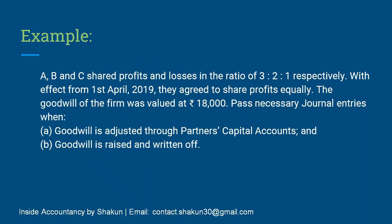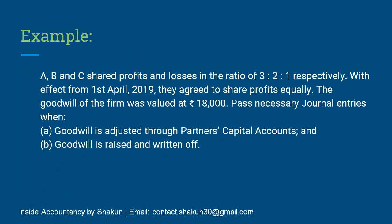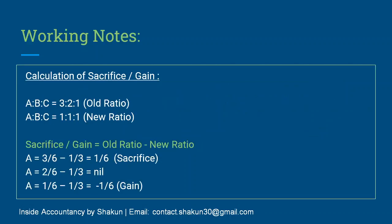Now let's take an example. A, B, C shared profits and losses in the ratio of 3:2:1 respectively — that's the old ratio. With effect from 1st April, they agreed to share profits equally, that is 1:1:1, which is the new ratio. The goodwill of the firm was valued at 18,000. When you read 'was valued at,' that refers to new goodwill. Pass necessary journal entries when (1) goodwill is adjusted through partners' capital accounts, and (2) when goodwill is raised and written off. So let's look at the working notes first.